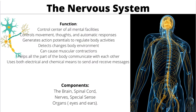The nervous system is called the control center. Its main functions are to control all mental facilities, control movement, initiate autonomic responses, generate action potentials, regulate body activities, detect changes in body environment, cause muscular contractions, and help all parts of the body communicate using electrical and chemical means. Its main components are the brain, spinal cord, nerves, and special senses such as the eyes and ears.